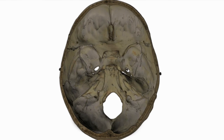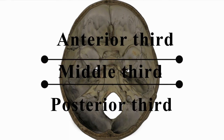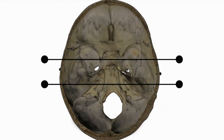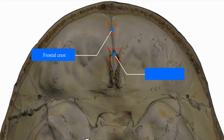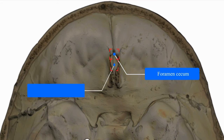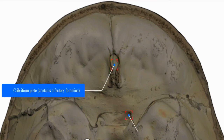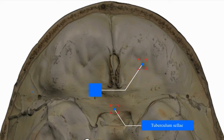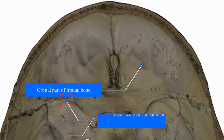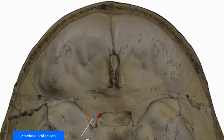The skull base is divided into three thirds: anterior, middle, and posterior. The anterior third contains frontal crest, foramen cecum, cribriform plate containing olfactory foramina, optic canal, chiasmatic sulcus, tuberculum sellae, orbital part of the frontal bone, lesser wing of sphenoid, and anterior clinoid process.